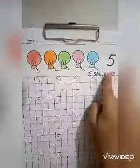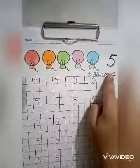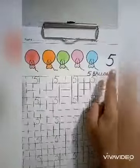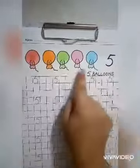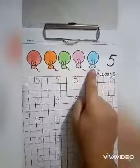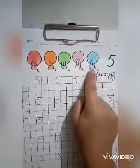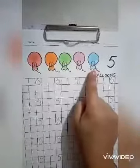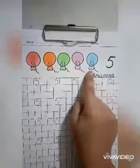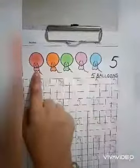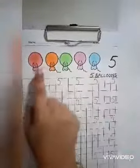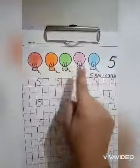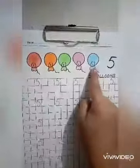So, dear children, tell me, which number is this? This is number 5. And babies, tell me, what are these? These are balloons. Okay babies, let's count. How many balloons are there? Count with me: 1, 2, 3, 4 and 5.